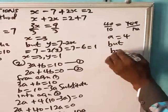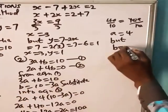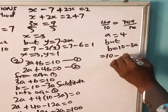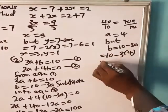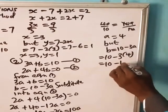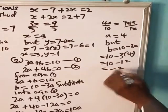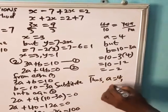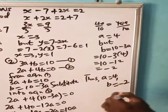But b is 10 minus 3a. This equals to 10 minus 3a. 3 times a is 4. So 10 minus 3 times 4 is 12. This equals minus 2. So first, a is 4. And b is minus 2.